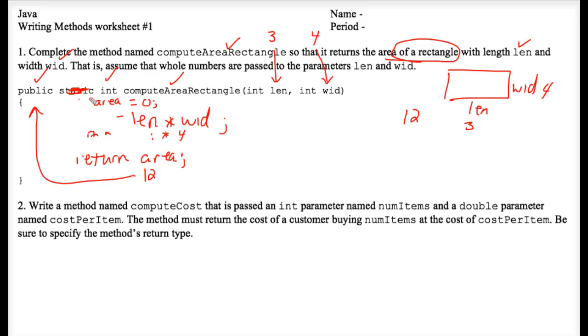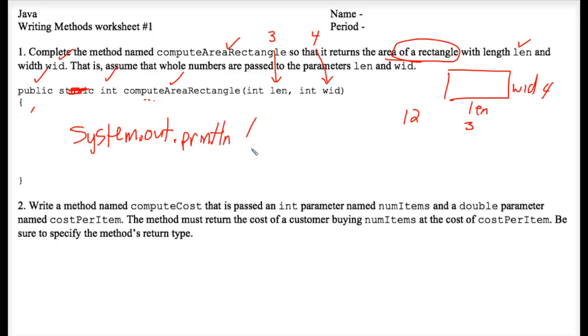Here are some wrong answers. Do not system out print. That is a common mistake and they never ask you to do that on the AP exam. You would not system out print len times wid. That's just wrong. You're not reading the specs. You're not reading the post condition up here. It never said to display anything. It said to return it.